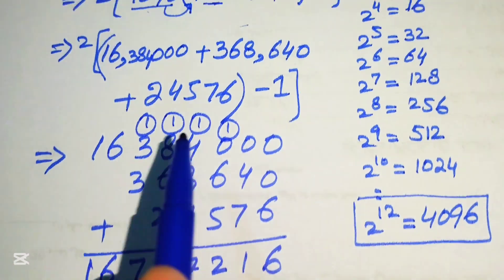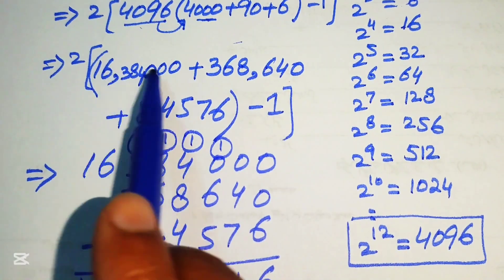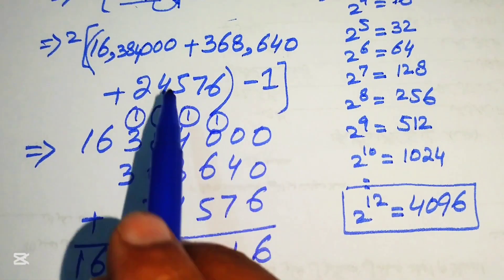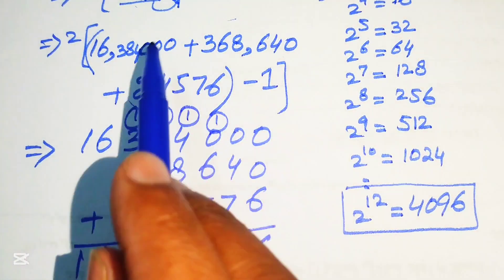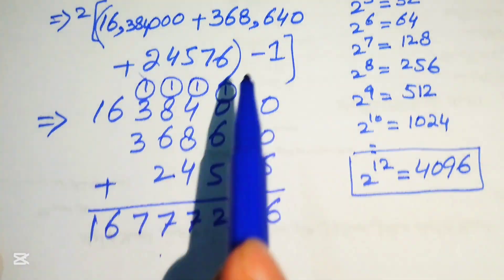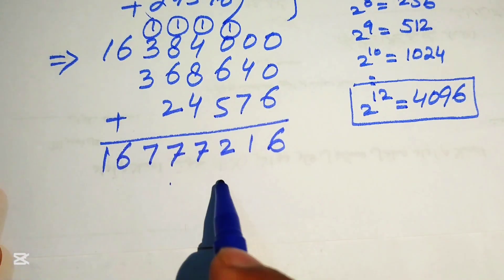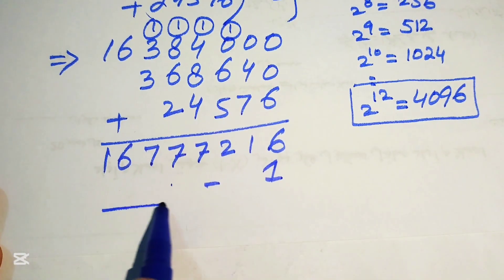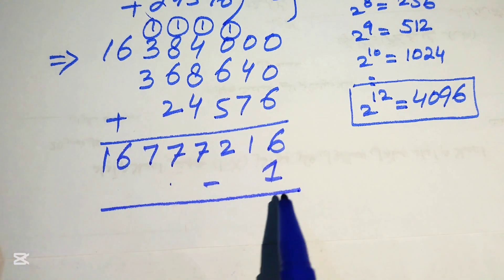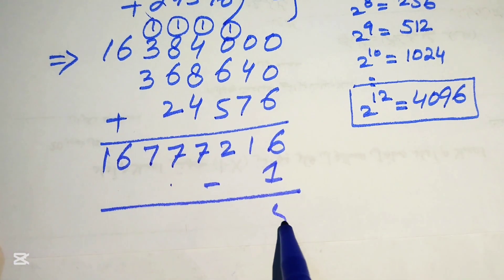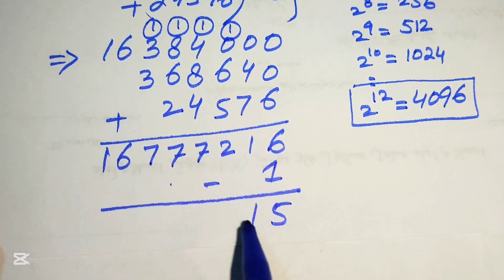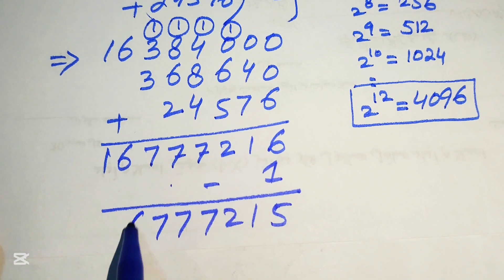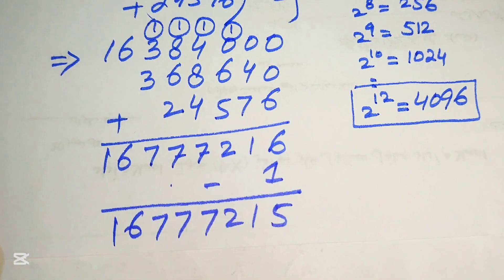When you add these three numbers you get the whole sum. We then subtract 1 from this number: the last digit 6 minus 1 becomes 5, giving us 16,777,215.